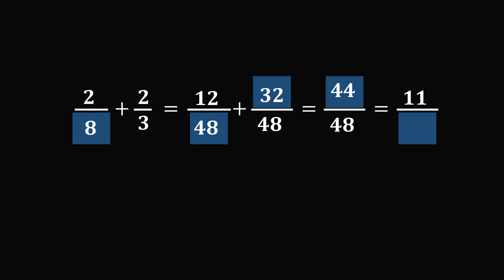Finally, we take a look at the simplification. 44 is reduced by a factor of 4 to get to 11. So we need to reduce the denominator by the same factor. So 48 divided by 4 is equal to 12. And we have now solved the problem.